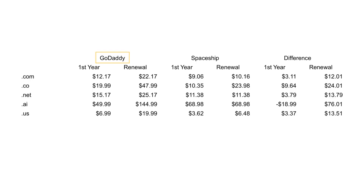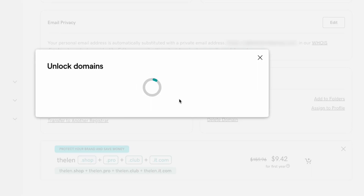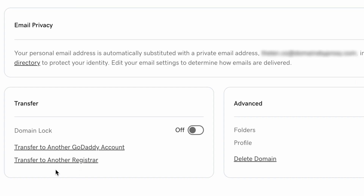Here's a list of the prices with GoDaddy and Spaceship for .com, .co, .net, .ai, and .us. You may have to unlock your domain like you see here before you're able to transfer it.